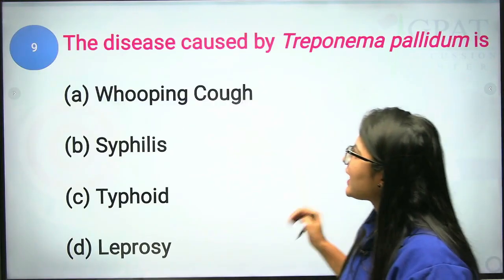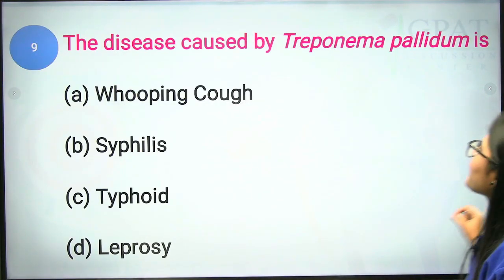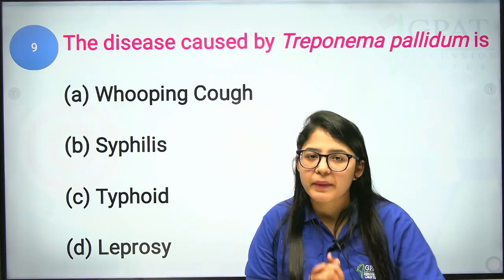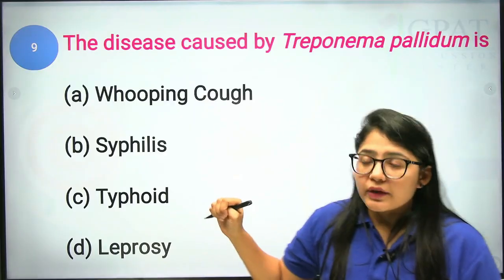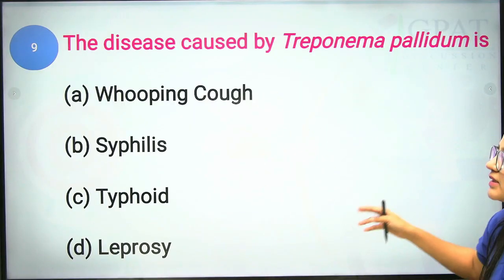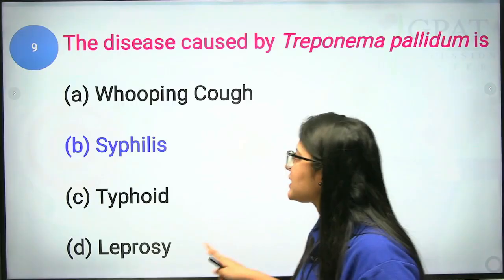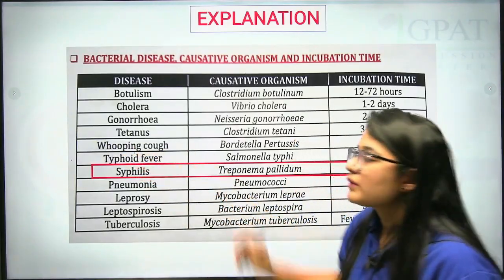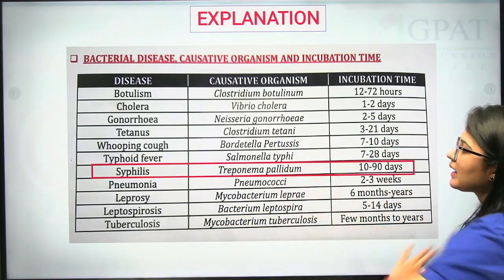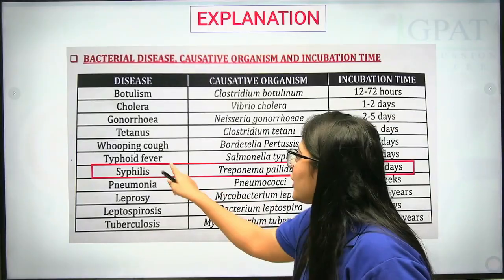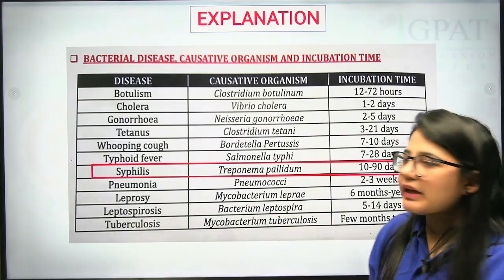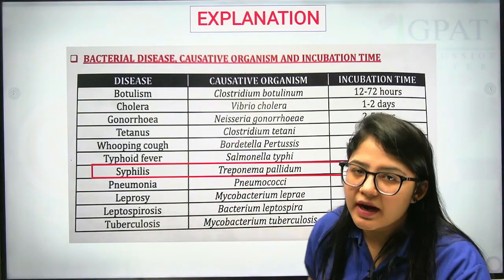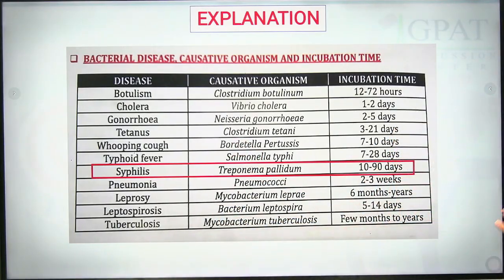The ninth question: the disease caused by Treponema pallidum is syphilis. The correct answer is syphilis. For reference: whooping cough is caused by Bordetella pertussis, typhoid fever by Salmonella typhi, and leprosy by Mycobacterium leprae. Take a screenshot of this chart and review it whenever you have a short time.